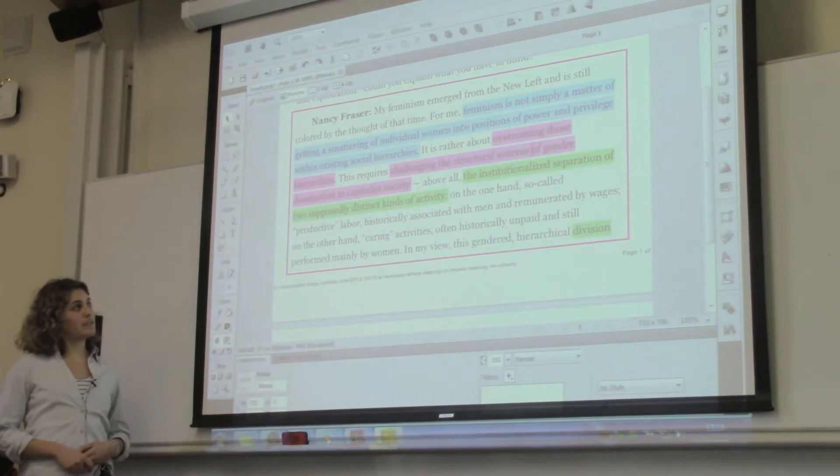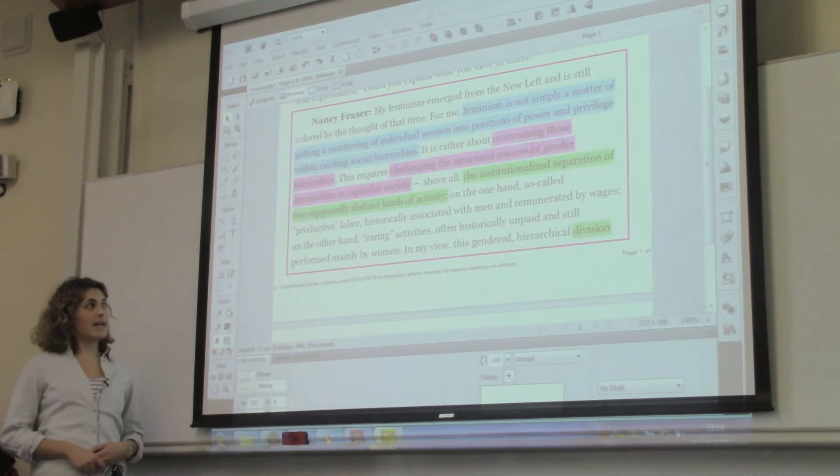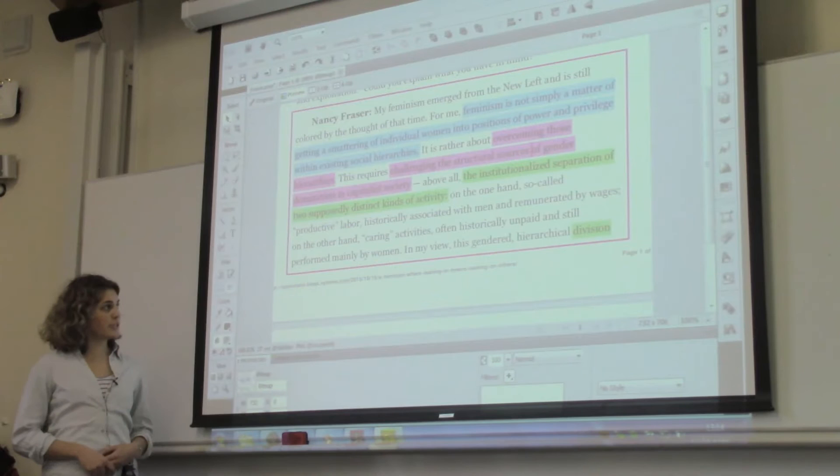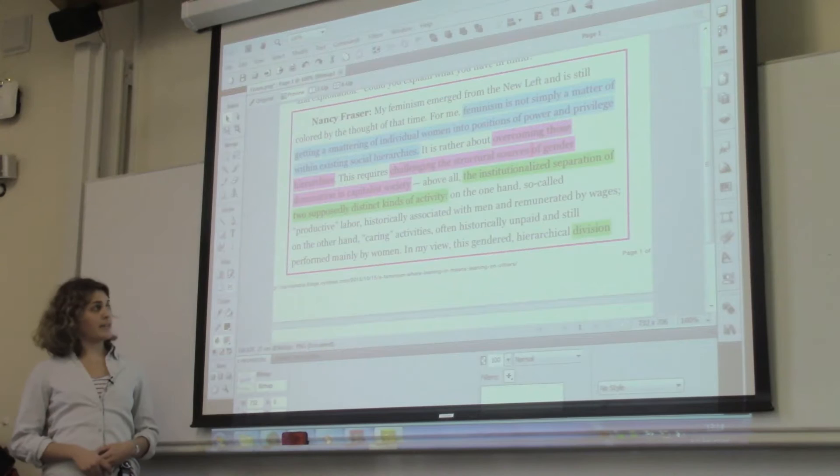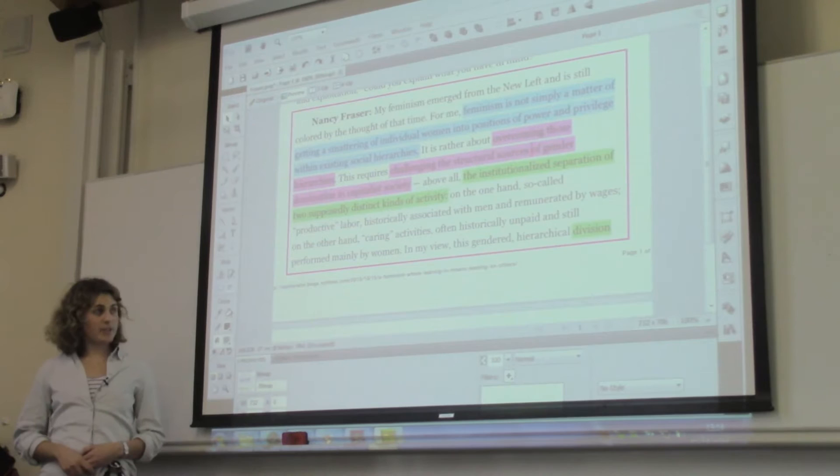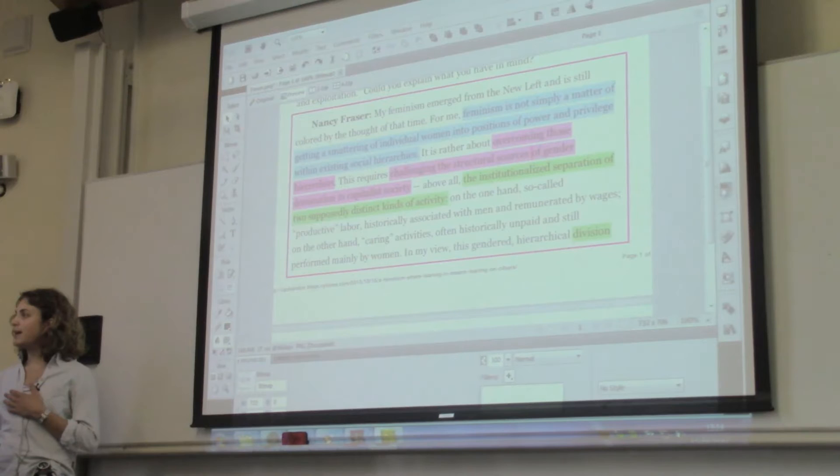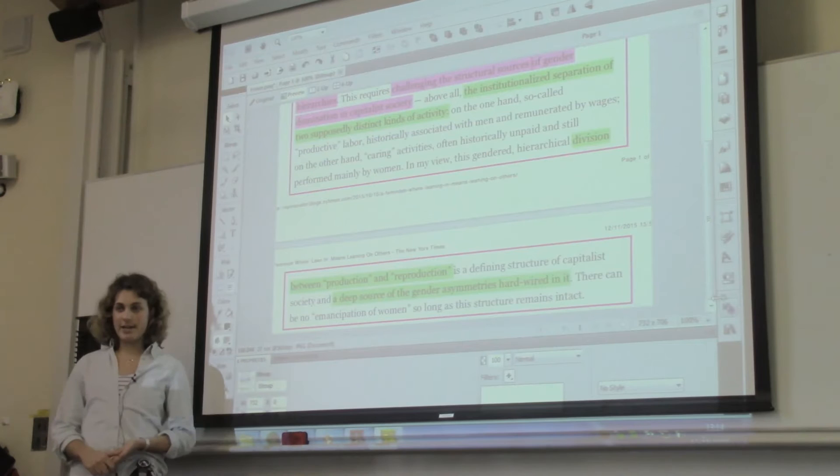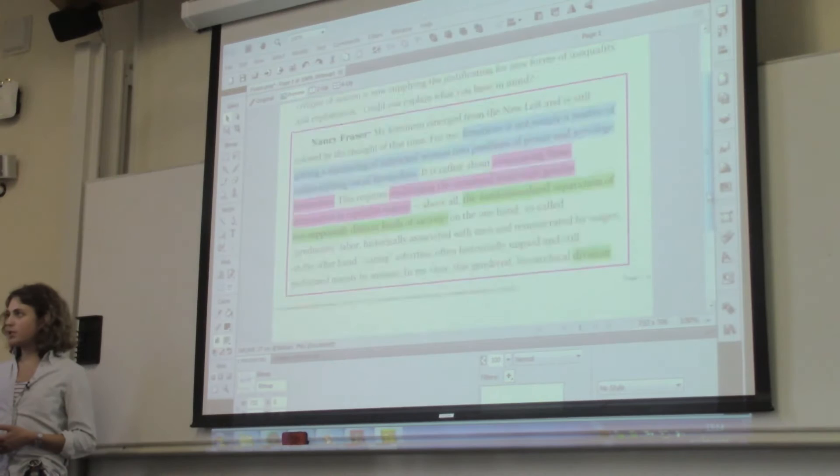Above all, the institutionalized separation of two supposedly distinct kinds of activities. On the one hand, the so-called productive labor, which has historically been associated with men and remunerated by wages. And on the other hand, the so-called caring activities, often unpaid and still performed mainly by women. In my view, she says, this gendered hierarchical division of labor between production and reproduction is a defining structure of capitalist society and a deep source of the gender asymmetries hardwired in it. And I'd like to draw your attention to three points which Fraser makes here.